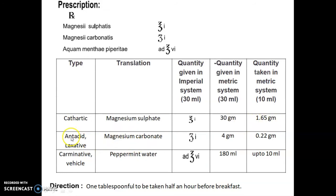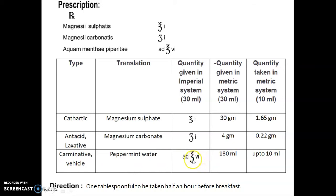Second ingredient: magnesium carbonate — use is antacid and laxative. In the imperial system, the quantity given is drachm I; one drachm equals 4, so 4 × 1 = 4 grams. Quantity taken is 4 × 0.055 = 0.22 grams. Third ingredient: peppermint water — use is carminative and vehicle. Quantity given is add. ounce VI; VI is Roman for 6, and 1 ounce = 30 ml, so 30 × 6 = 180 ml. Multiplying 180 ml by factor 0.055 gives 10 ml. Volume make-up: add vehicle up to 10 ml. Direction: one tablespoonful to be taken half an hour before breakfast.